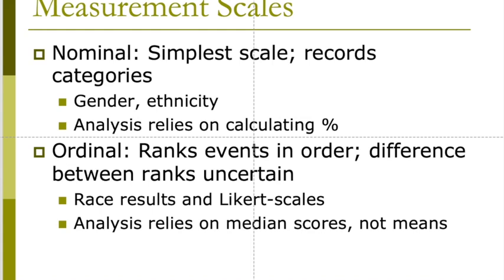Nominal scales are the simplest kinds of scales. They are just records of categories. For example, gender, ethnicity, and marital status are all nominal categories. The only thing you can do with this kind of data is calculate percentages — so you can say the percent of your participants that were male or female, the percent that were Latino or Latinx. It does not compare a quantity, or say that one category is better or higher or lower than another.